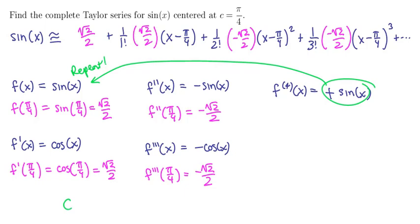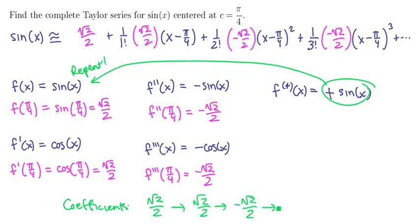This means all of my derivatives are going to repeat in a very cyclic pattern. The coefficients are going to cycle through: √2 over 2, then √2 over 2, then negative √2 over 2, then negative √2 over 2. The fourth derivative will be √2 over 2 again, and this cycle of two positives, two negatives repeats.